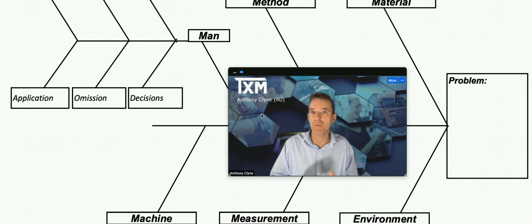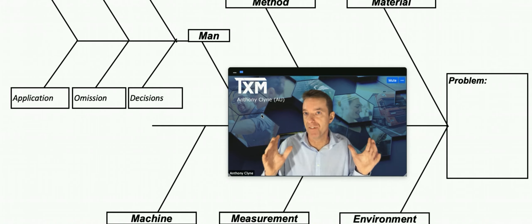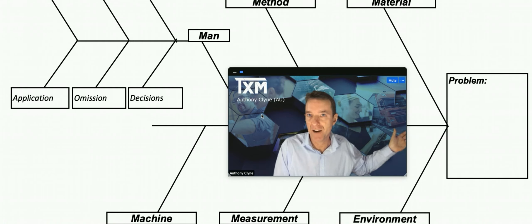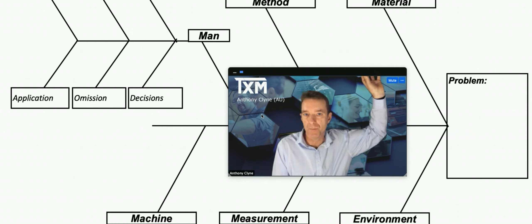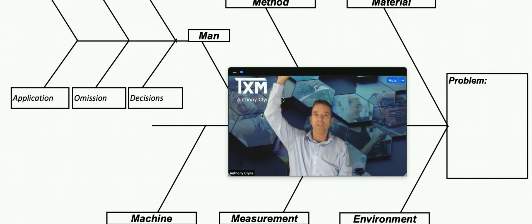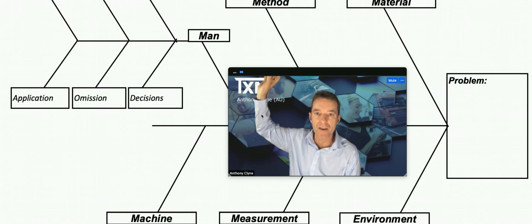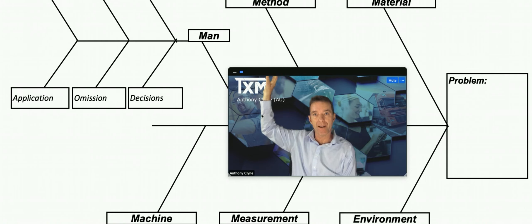Now the causes are represented by the branches of the fish bone surrounded by the heart of the fish. Over here we write the problem, a simple description of what the problem is. Moving around the branches, if there's a material cause that caused the problem, then we write it on this branch up here. Then the method causes is up above me, so if it's the way that the work is being done and the way it's designed then that could be a problem.